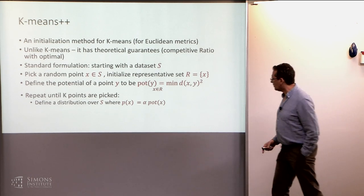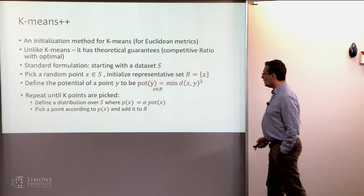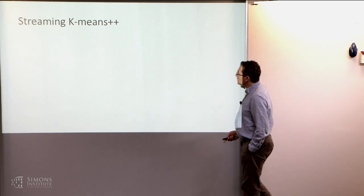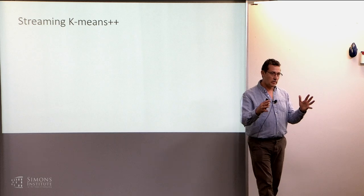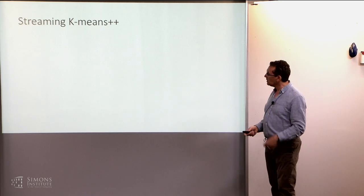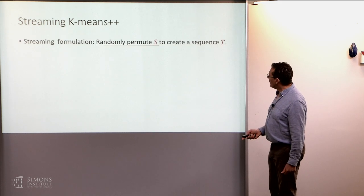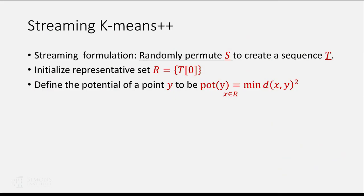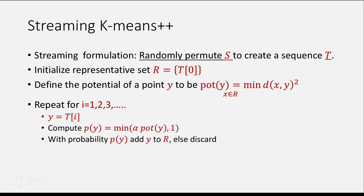So basically this potential, you have a distribution that is a probability that's proportional to this potential. And that's the probability with which you accept the point. And you repeat. So now what would be streaming K-means plus plus? So usually K-means plus plus is defined just in the batch setting. You define a distribution over all of your instances. And then you pick. But you can easily do it in a streaming way. Right? You randomly permute the data. And you initialize. And then you define the potential in the same way. And then you repeat. Basically, you go through the examples. And for each example, you compute the minimum of some alpha times the potential and one. And then you pick a point according to this probability.